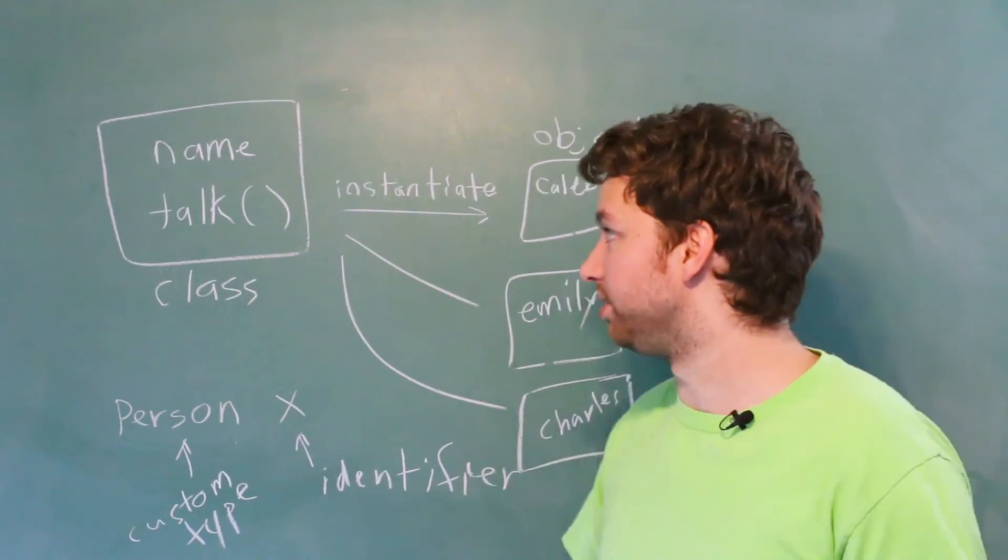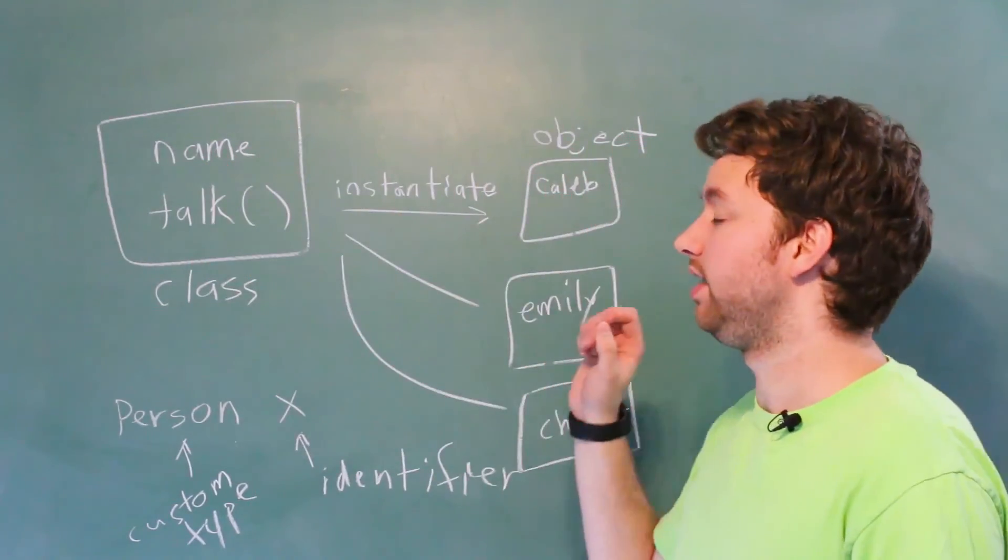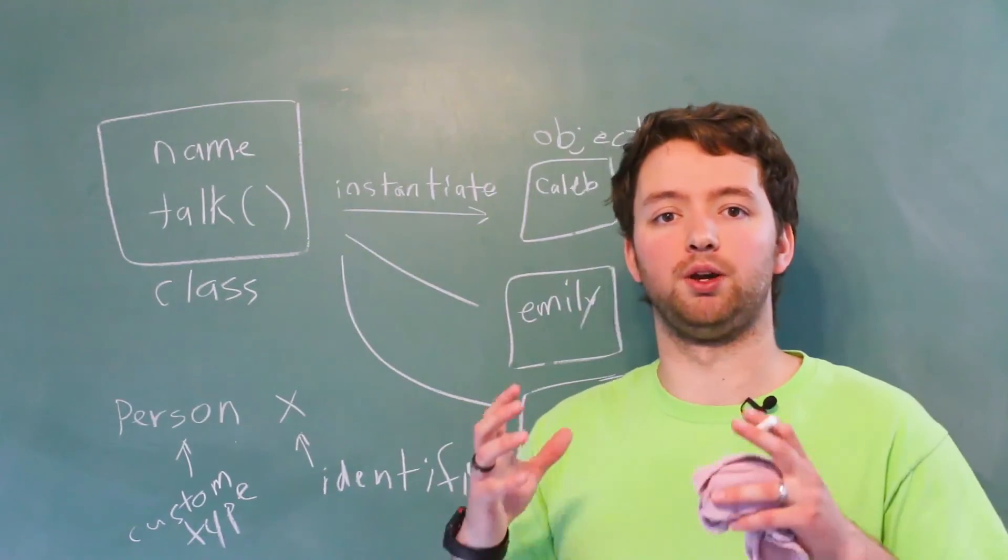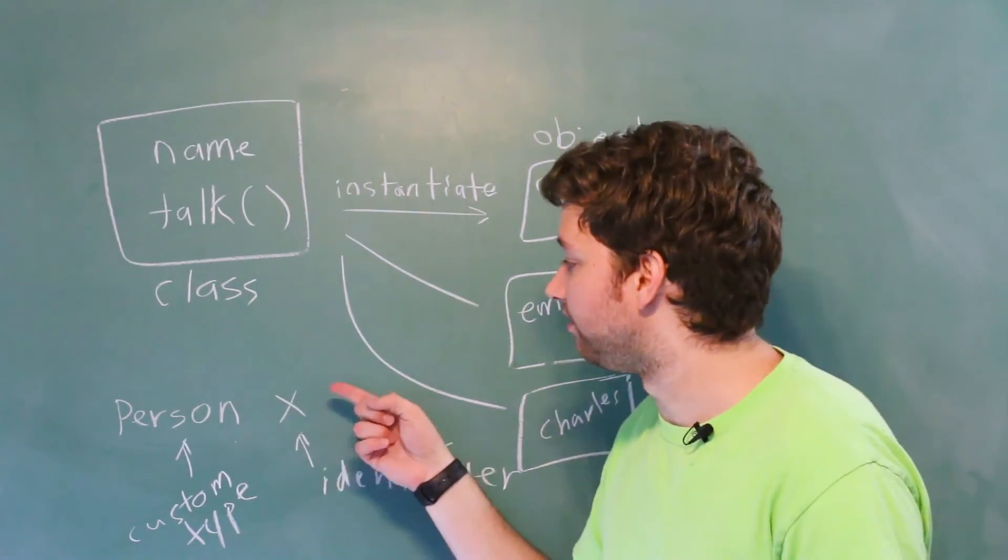And the third thing you need to know besides classes and objects is that when we create a class, we're essentially creating a custom type. And we instantiate it by making a variable.